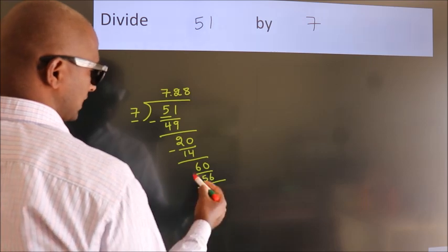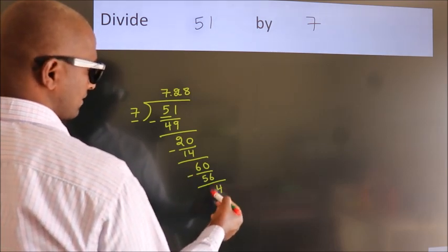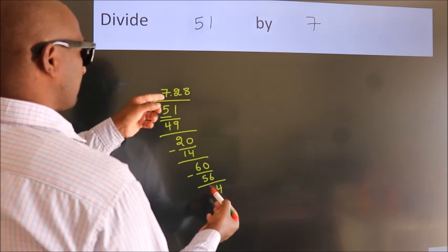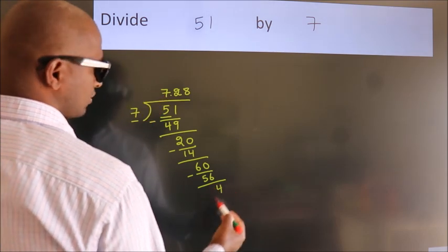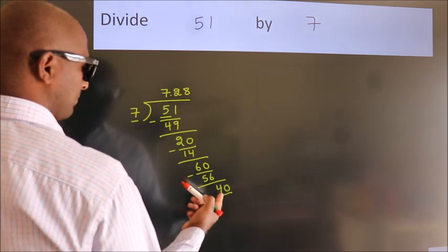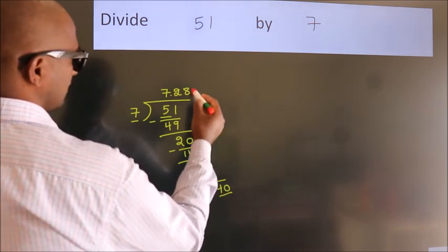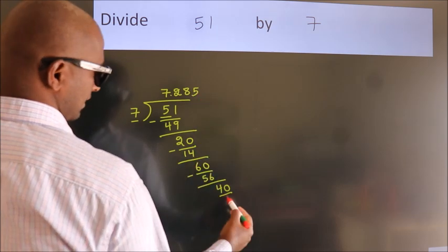Now we subtract. We get 4. After this, we already have the decimal. So directly take 0. So 40. A number close to 40 in 7 table is 7 fives 35.